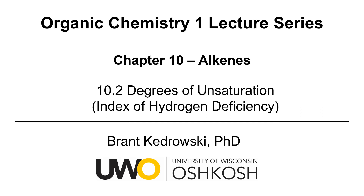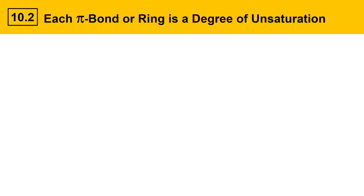Hello everyone, my name is Brant Kudrowski and this organic chemistry video covers degrees of unsaturation, also known as index of hydrogen deficiency. Each pi bond or ring that's present in an organic molecule is considered a degree of unsaturation. This is a feature that affects its formula.